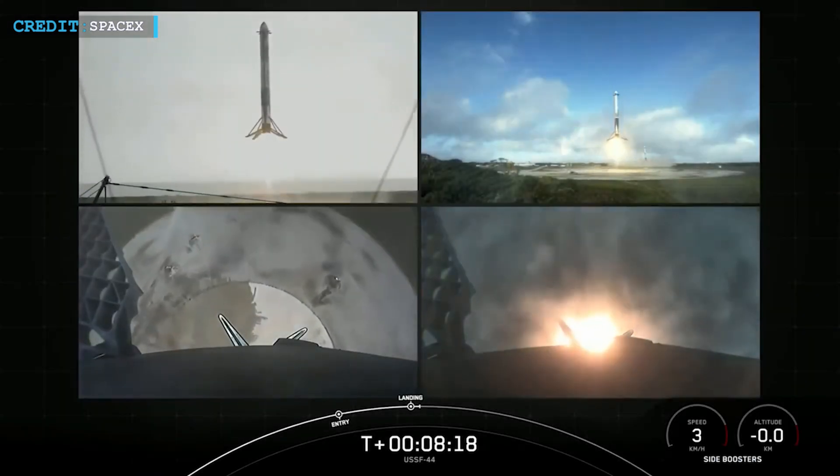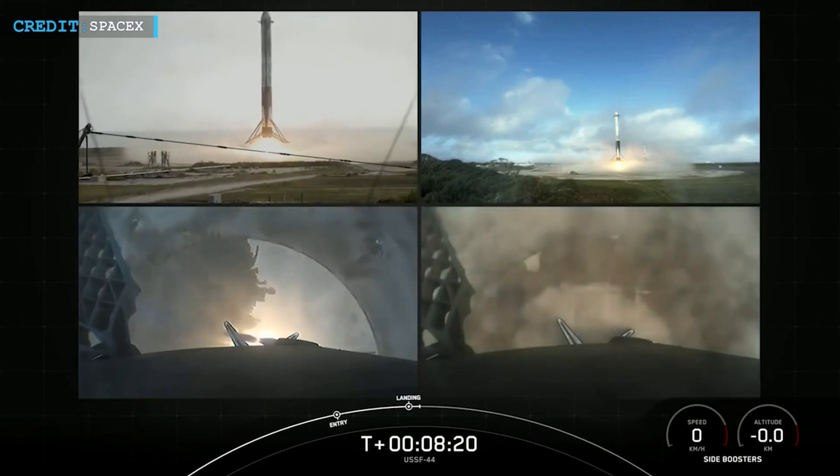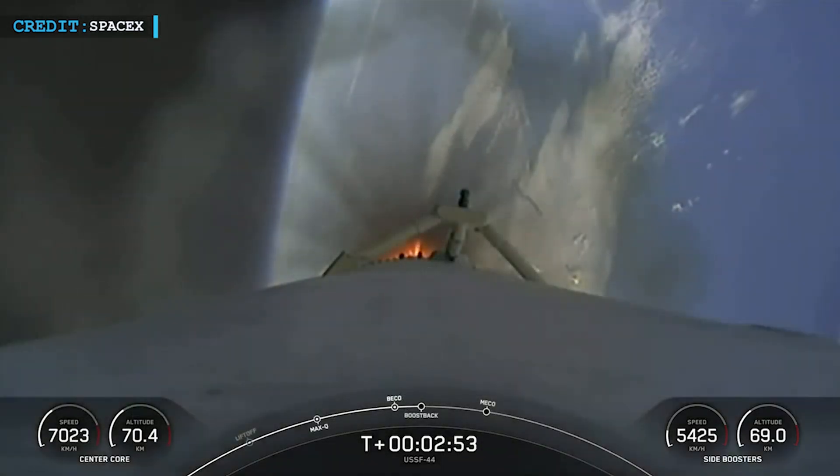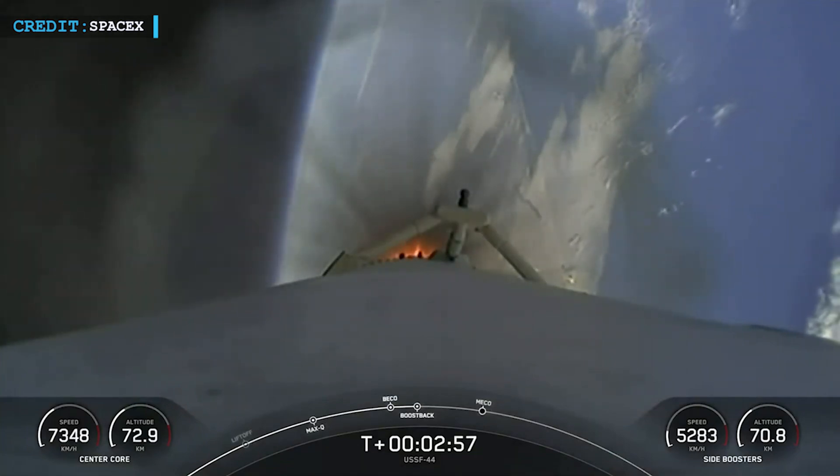Therefore, after completion of launch, SpaceX recovered and landed only two side boosters of the Falcon Heavy rocket and the center core used its fuel stored for recovery to push the upper stage into required orbit.